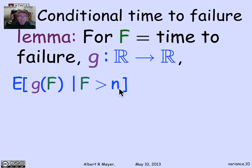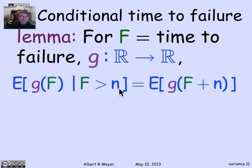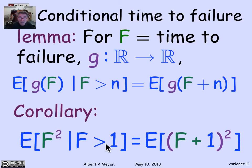The memoryless property means that the probability of failing in one more step is still p, in two more steps is qp, and so on — the only difference is that f has been shifted by n. So the corollary is: the expectation of f² given f>1 is simply the expectation of (f+1) squared.